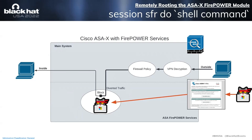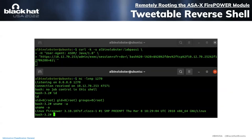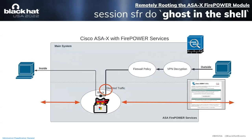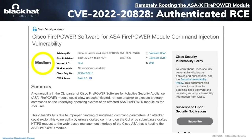An attacker over the internet can achieve a root shell on the Firepower module virtual machine by sending a rather simple command injection exploit. The exploit is so simple it could fit in a tweet. Pictured here, you can see the tweetable version — using curl, bash, /dev/tcp, and netcat to throw the exploit and catch a reverse shell originating from the ASA. Cisco did release an advisory for this, but only after they realized it was a bypass for the lockdown sensor command. Cisco has released patches for most but not all ASAX with Firepower Services.